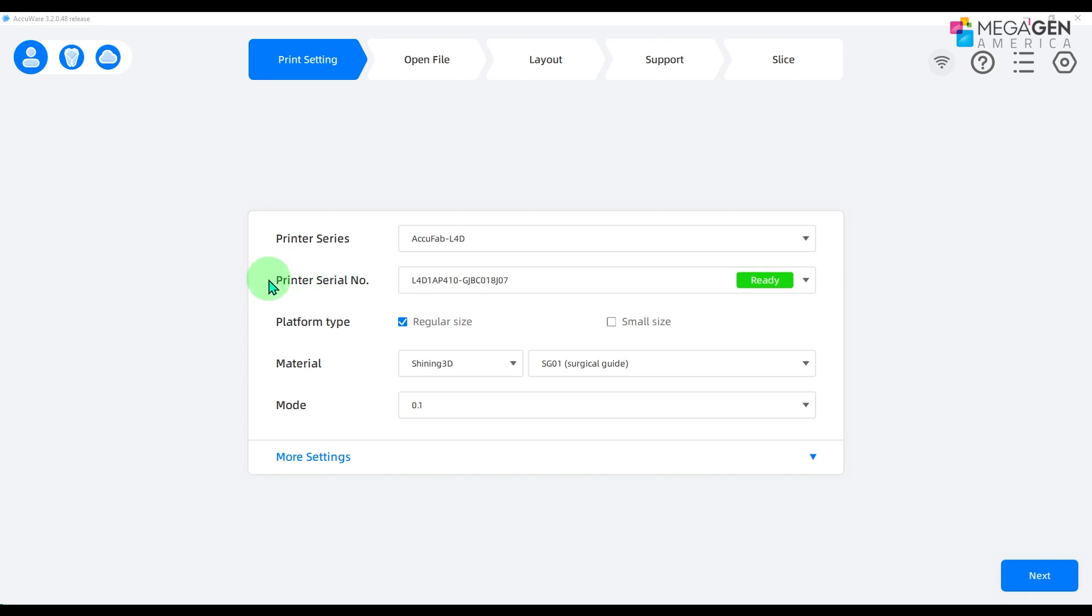Open the AccuWear software. In print setting, the printer type, serial number, and platform type can be seen.